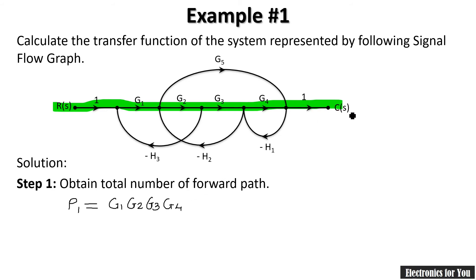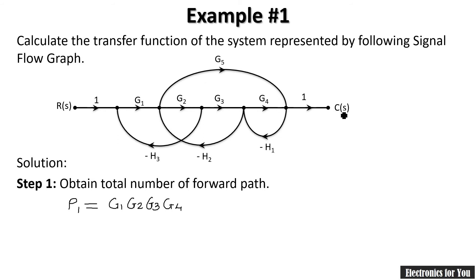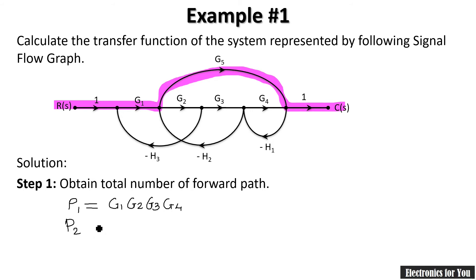The second forward path P2 bypasses G2, G3, and G4 by going through G5, reaching the output. Its gain is 1 × G1 × G5 × 1, which equals G1·G5. So we have two forward paths: P1 = G1·G2·G3·G4 and P2 = G1·G5.